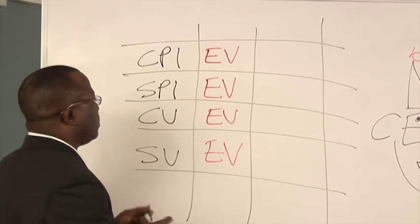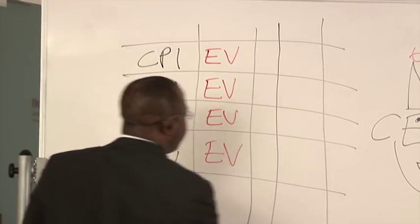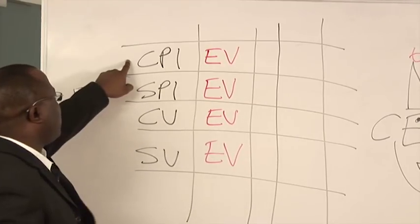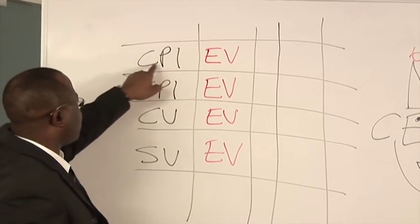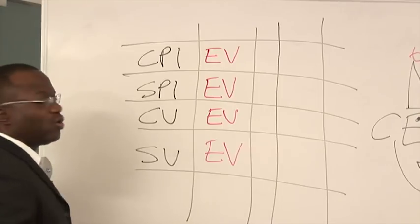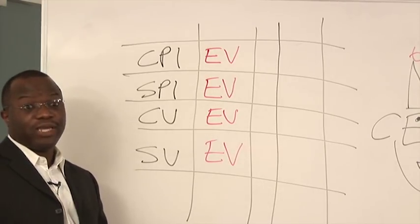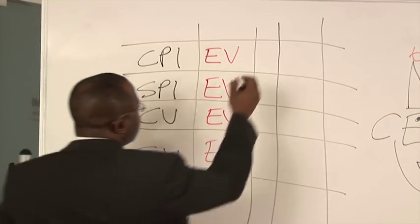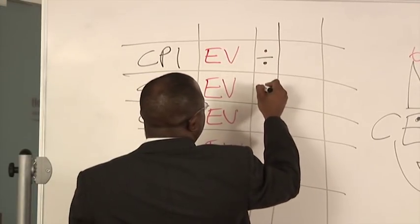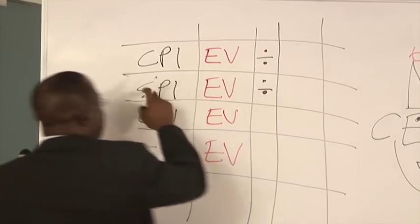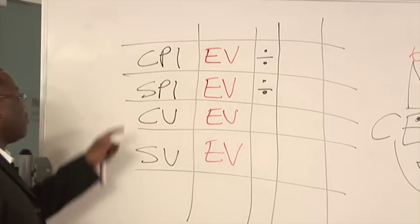You also need to remember basic math. If we're talking about an index, cost performance index, if you're talking about an index, what do we do? We divide. So we're going to put divide here and divide here. Because this is an index. Cost performance index.